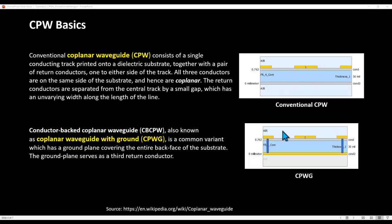In another format, you have conductor-backed coplanar waveguide, also known as coplanar waveguide with ground or CPWG, where the backside of the dielectric also has a conductor. The top ground and bottom ground are connected through plated through-holes or via holes. That conductor serves as the third return conductor. For all practical purposes, CPWG is the more common technology used for RF microwave designs.